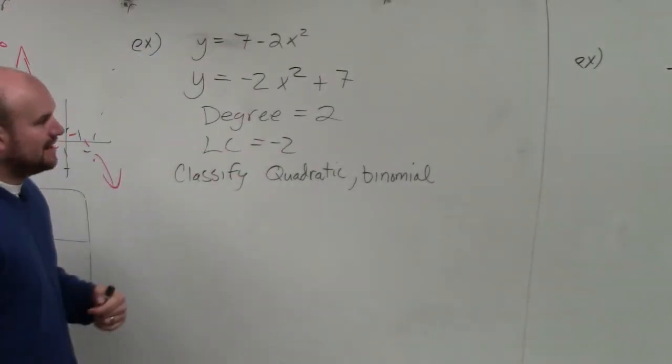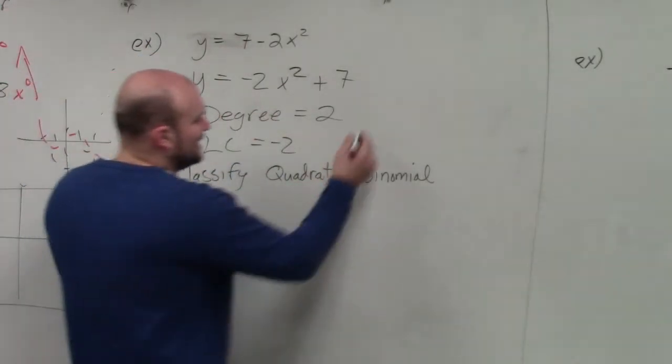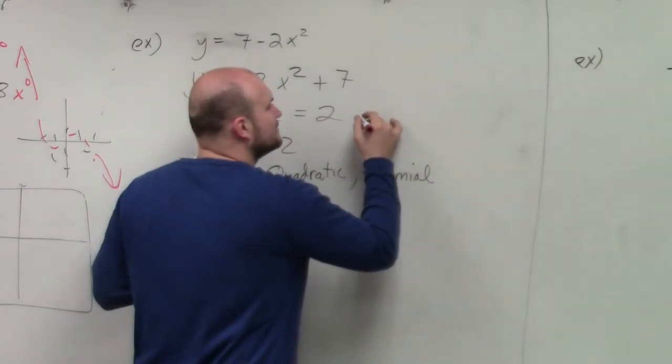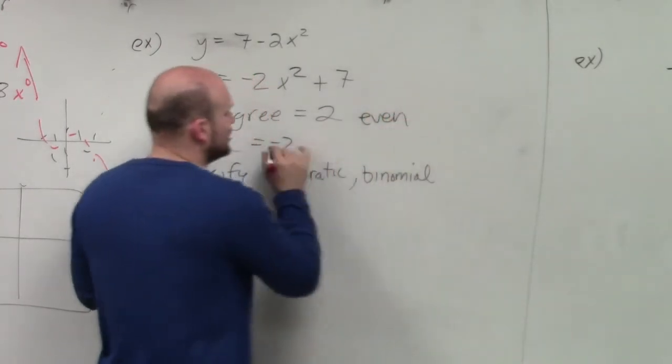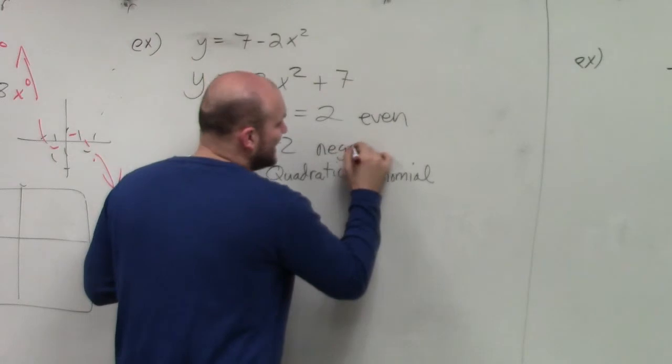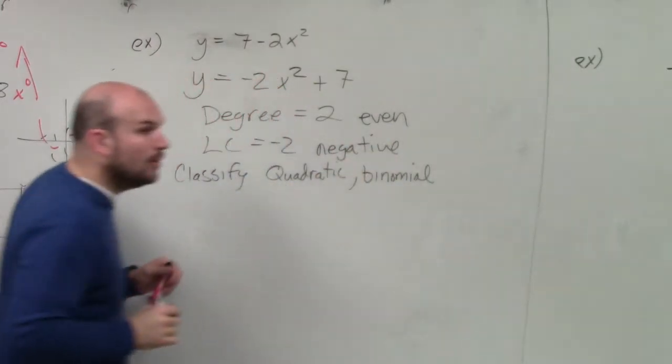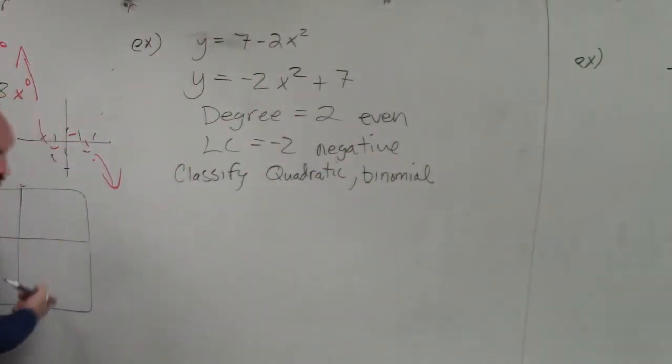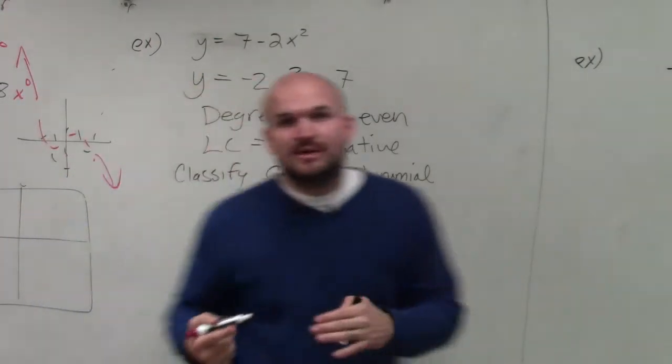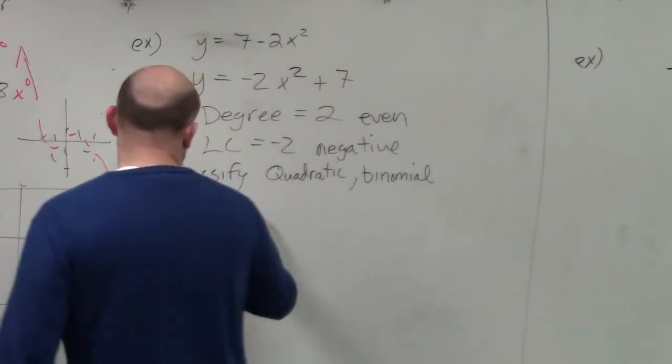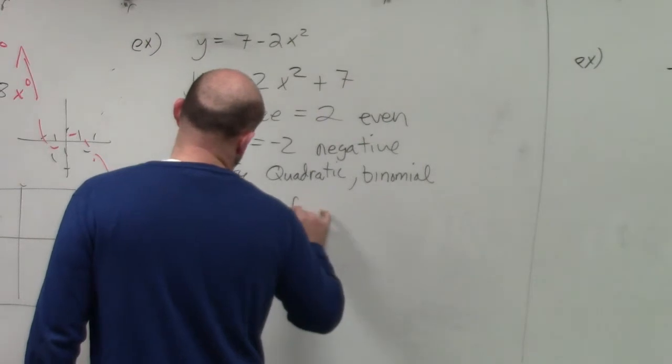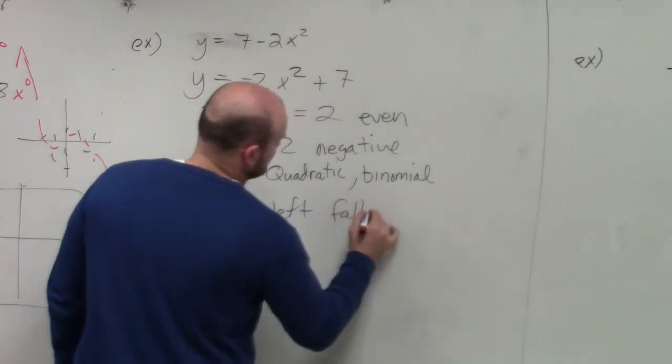So now we've got to determine end behavior. We notice that our degree is even and our leading coefficient is negative. So we go back to our little chart for end behavior. And when we determine what our end behavior is, this graph falls left and falls right.